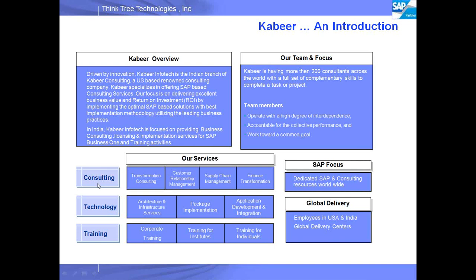Primarily, we do three things. We provide consulting services, which include various customer relations, business processes, supply chain transformation, and financial transformation. The second activity is technology services, which includes ERP implementations, various infrastructure services, and other application services.